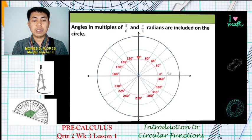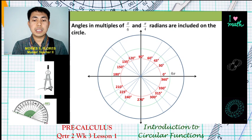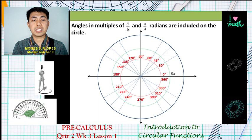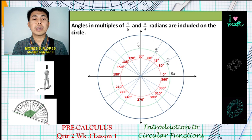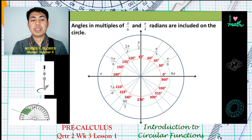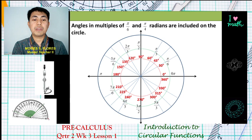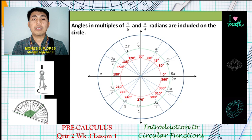After the angles in degrees, let us now determine the angles in radians. The multiples of π/6 are: π/6, π/3, π/2, 2π/3, 5π/6, π, 7π/6, 4π/3, 3π/2, 5π/3, 11π/6, and 2π.